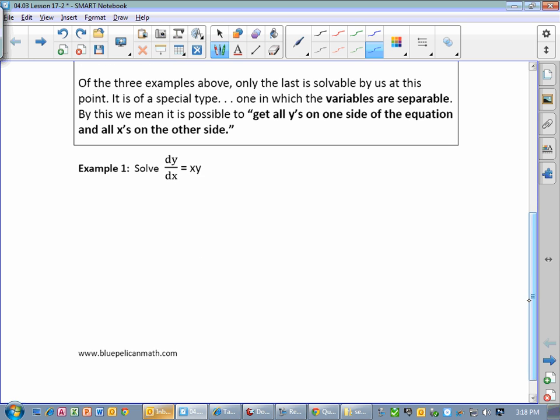So look at this first example. Solve dy dx equals xy. First off, how many x's does this equation have? Two. One. You said two first. Why did you say two? Because I thought dx and x. Okay, so there are two x's. There's a dx and there's an x. How many y's does it have? Two. There's a dy and a y. We need to get all of the x terms on one side, all of the y terms on the other side. So on this problem, how would we do that? How would we separate dx's and y's?